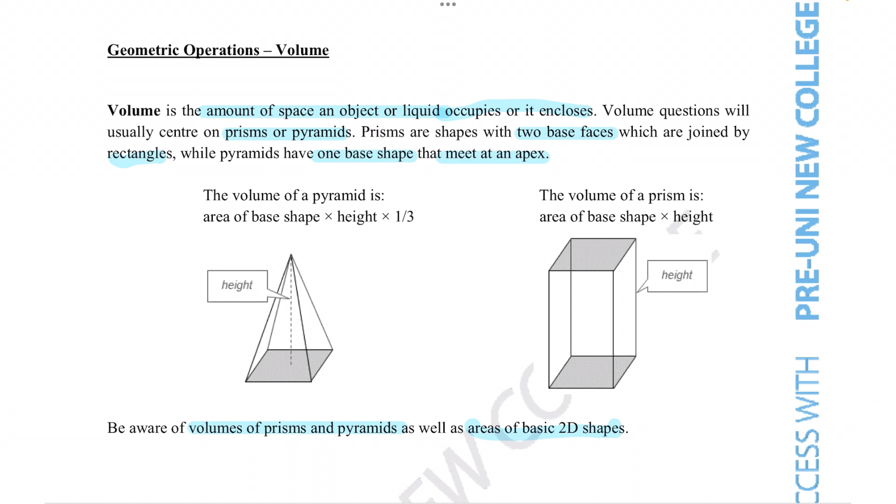Okay so volume is essentially just how much space an object occupies and we can see it's going to slightly vary depending on what kind of shape it is, whether that's a prism or a pyramid. Now prisms are kind of like the default formula because for prisms we can figure out the volume of any prism by using the formula here. By figuring out the area of the base shape, which in this case is a rectangle, and multiplying that by the height will then give you the entire volume of the prism.